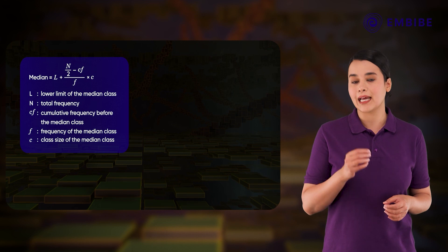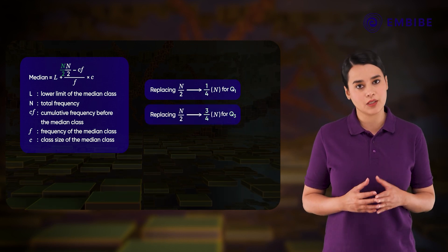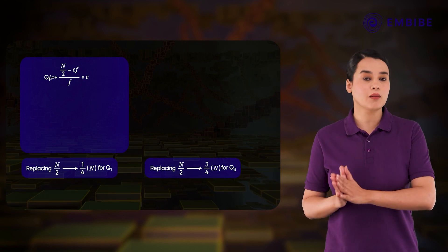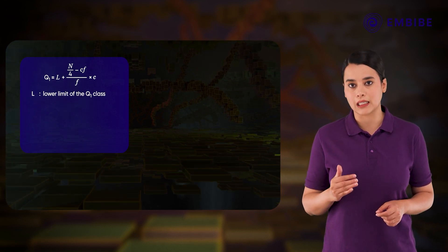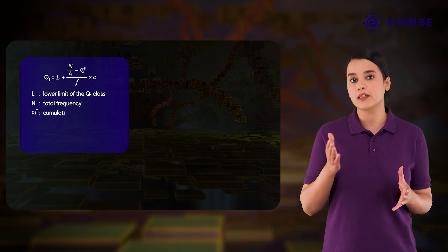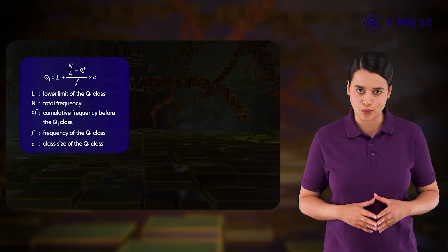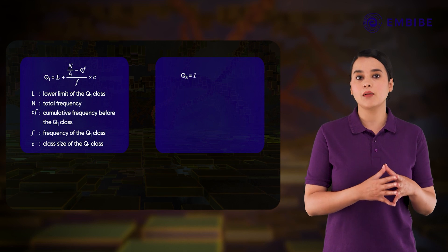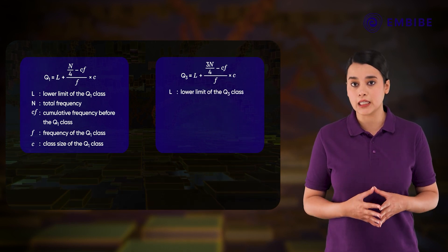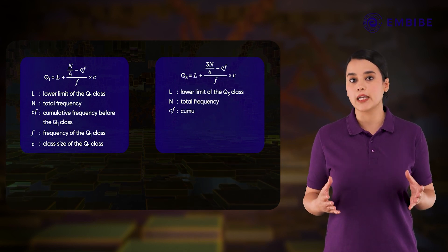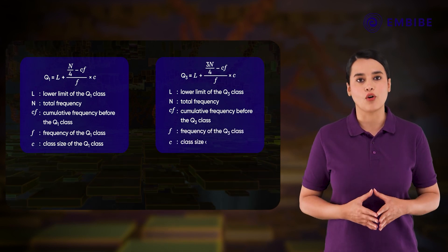The formulae for Q1 and Q3 are similarly calculated by replacing n/2 with n/4 and 3n/4 respectively. Q1 = L + [(n/4 − cf) / f] × c, where L is the lower limit of the Q1 class, cf is the cumulative frequency before the Q1 class, f is the frequency of the Q1 class, and c is the class size. Similarly, Q3 = L + [(3n/4 − cf) / f] × c, with all variables defined analogously for the Q3 class.